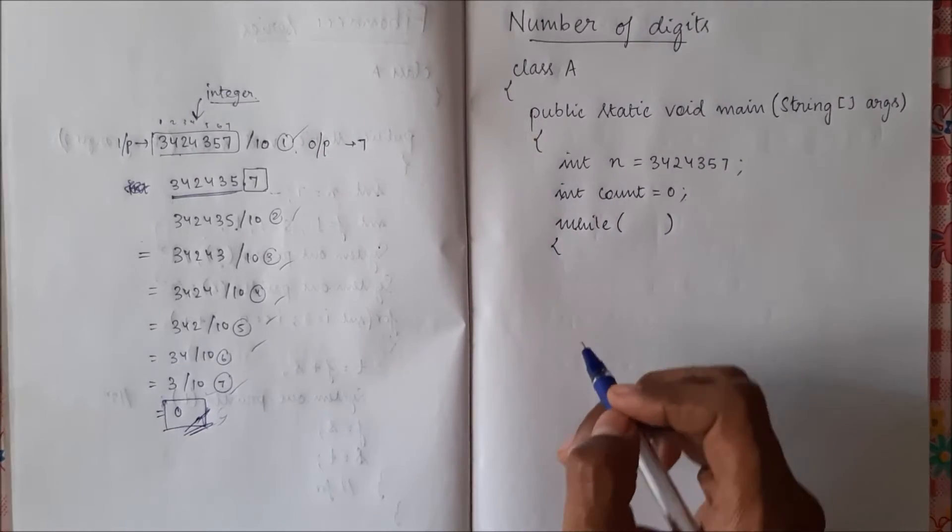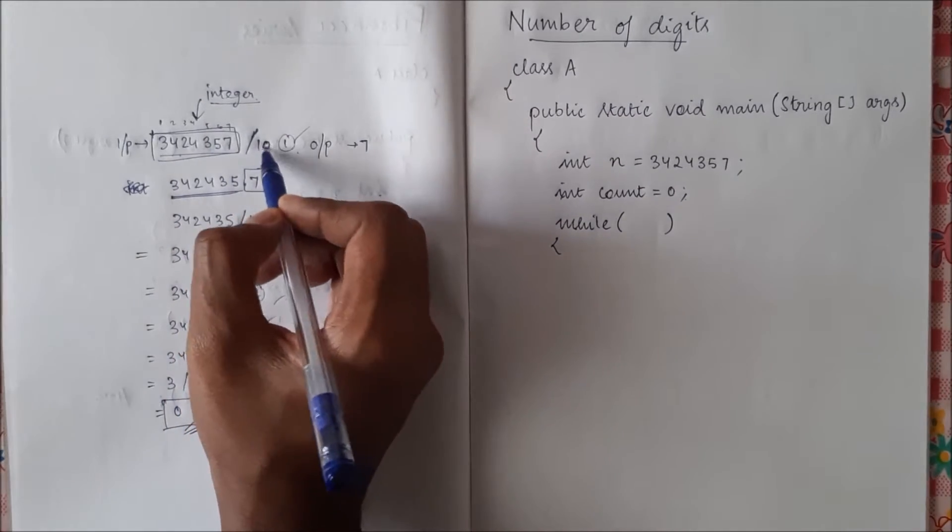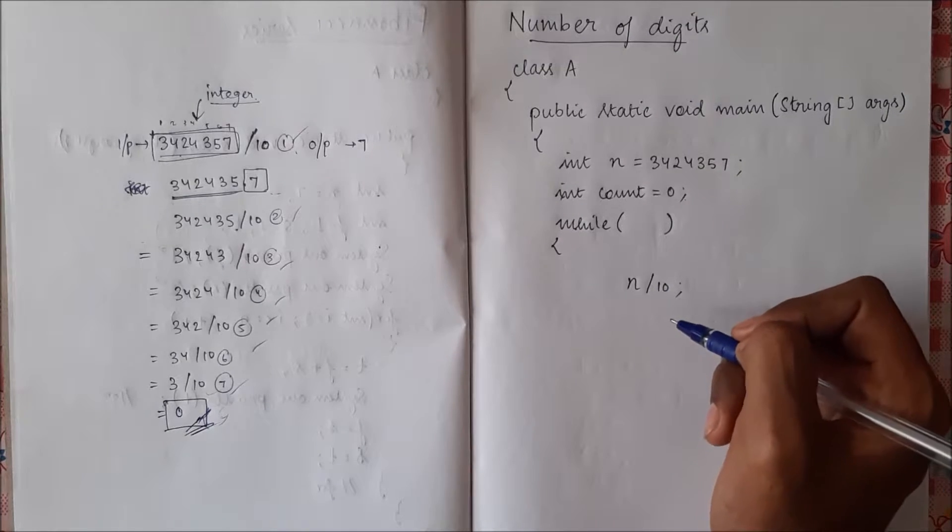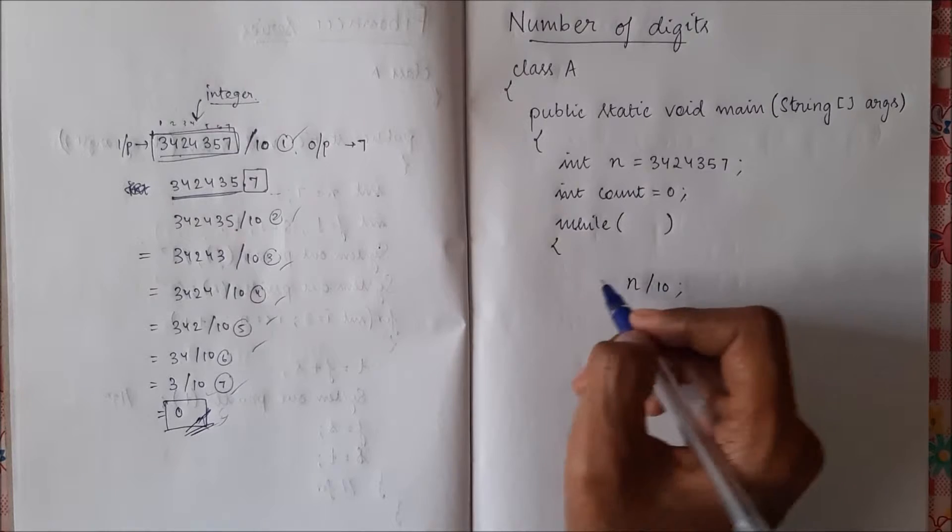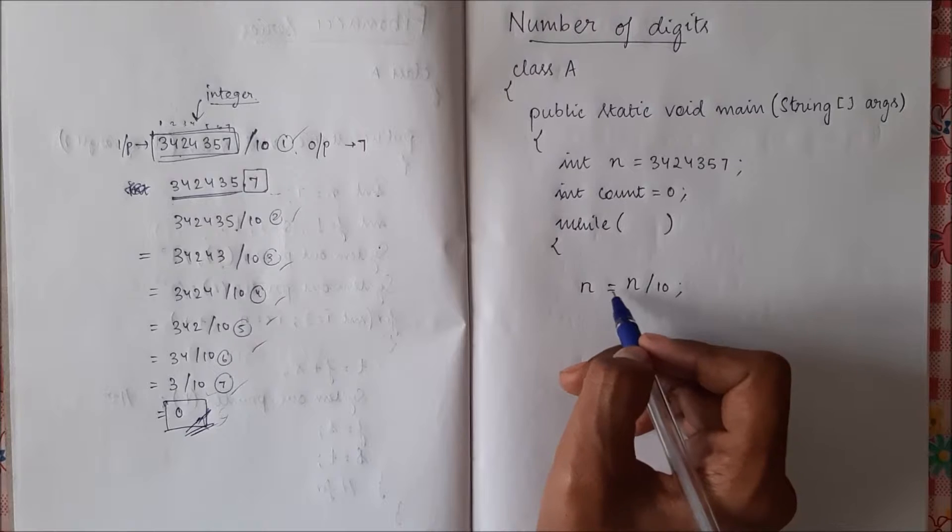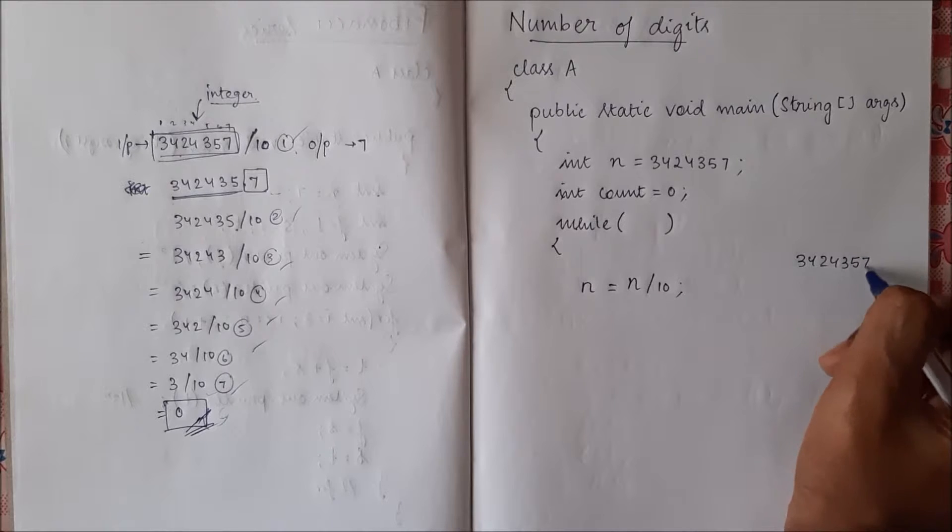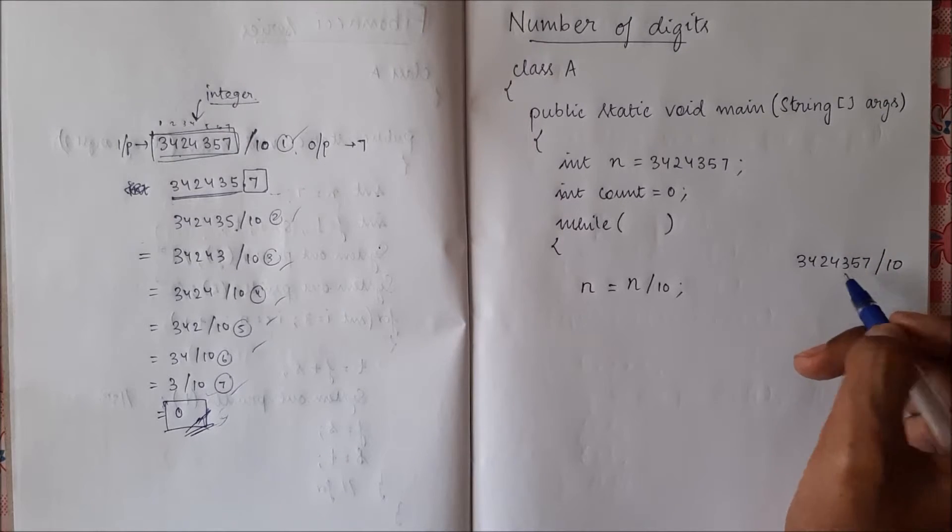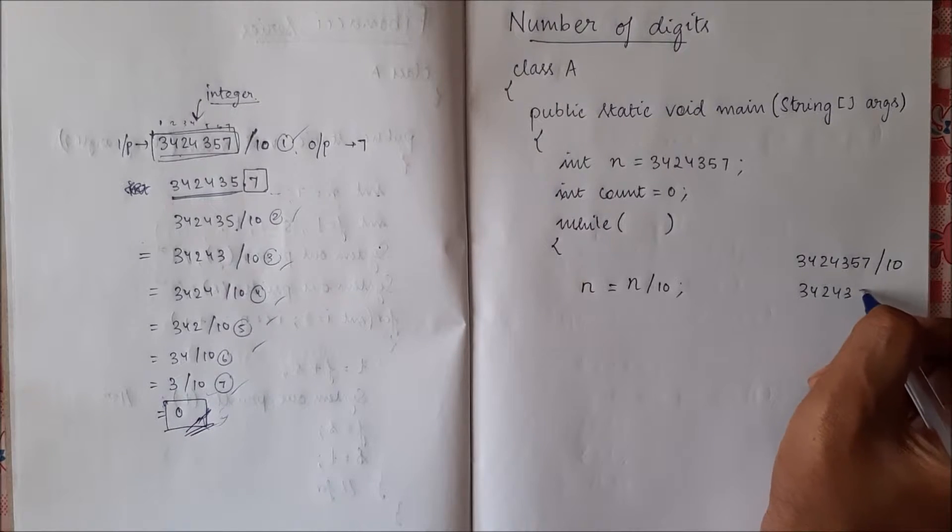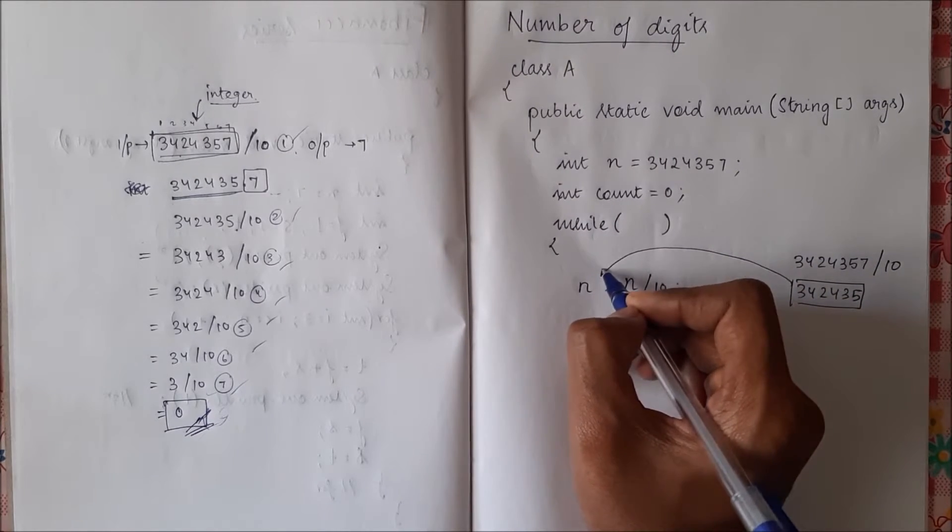I'll put the condition later. So this is n, we are dividing n by 10, so I'll write n by 10. Now this I will store it back to n. So initially what this statement will do is it will divide n by 10. What is the result? The result is this result will be stored in n.